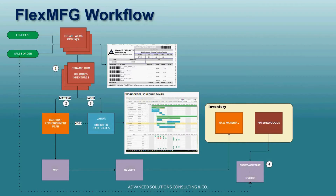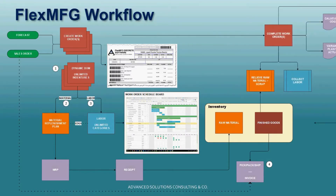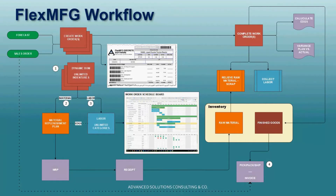Labor is managed via a graphical capacity planning tool. Upon completion of work orders, material and labor costs are consumed, which allows cost of goods sold analysis.